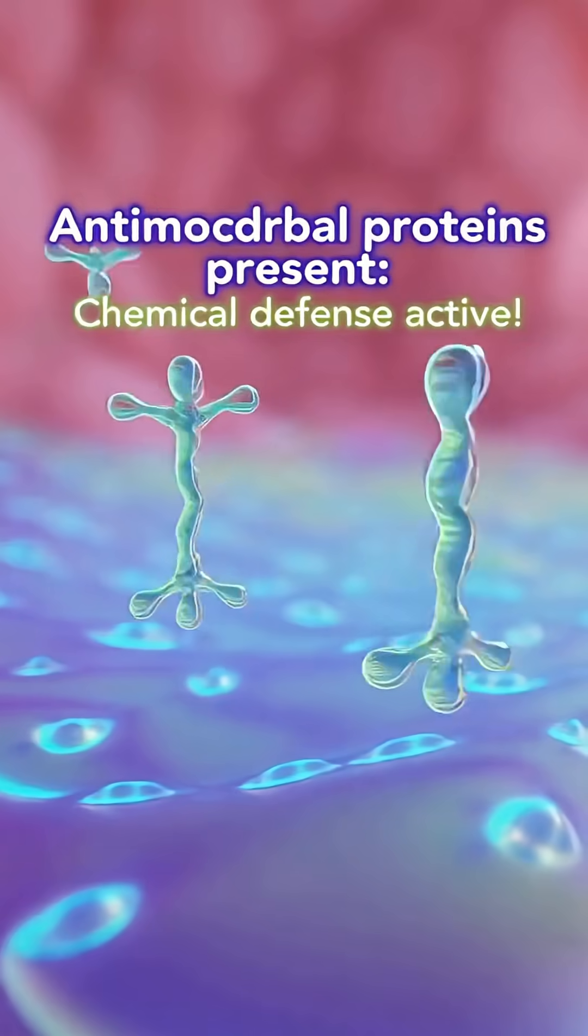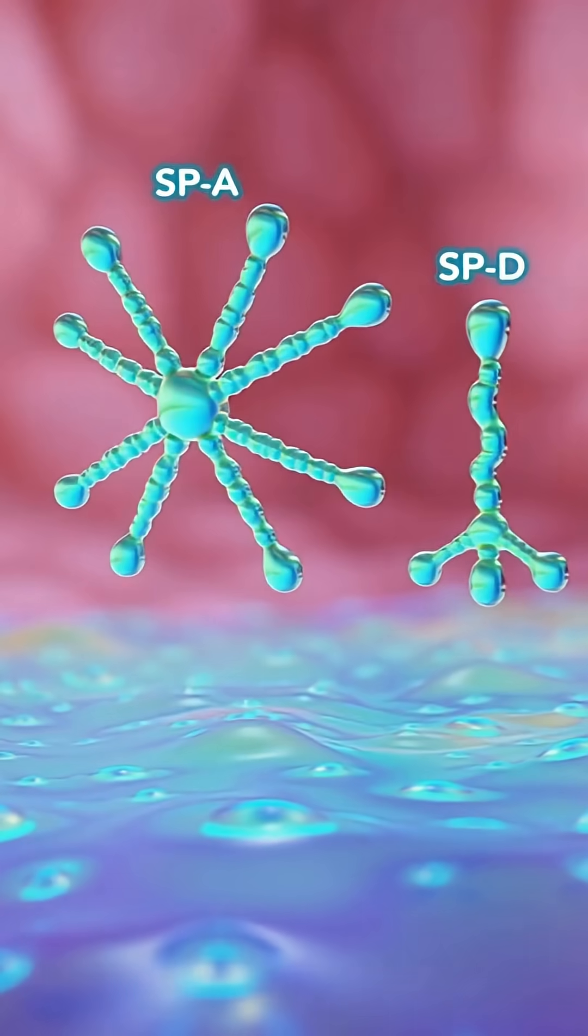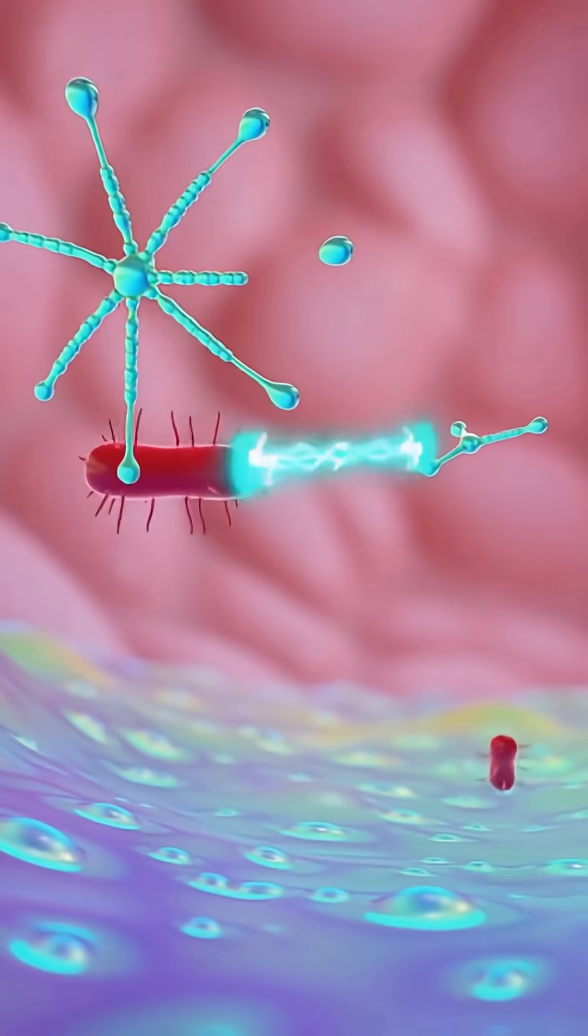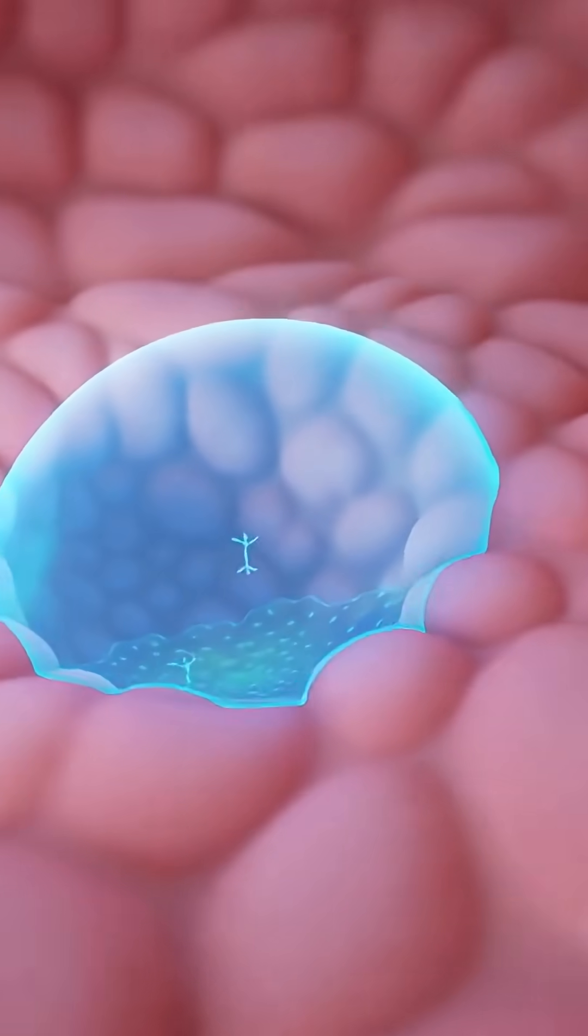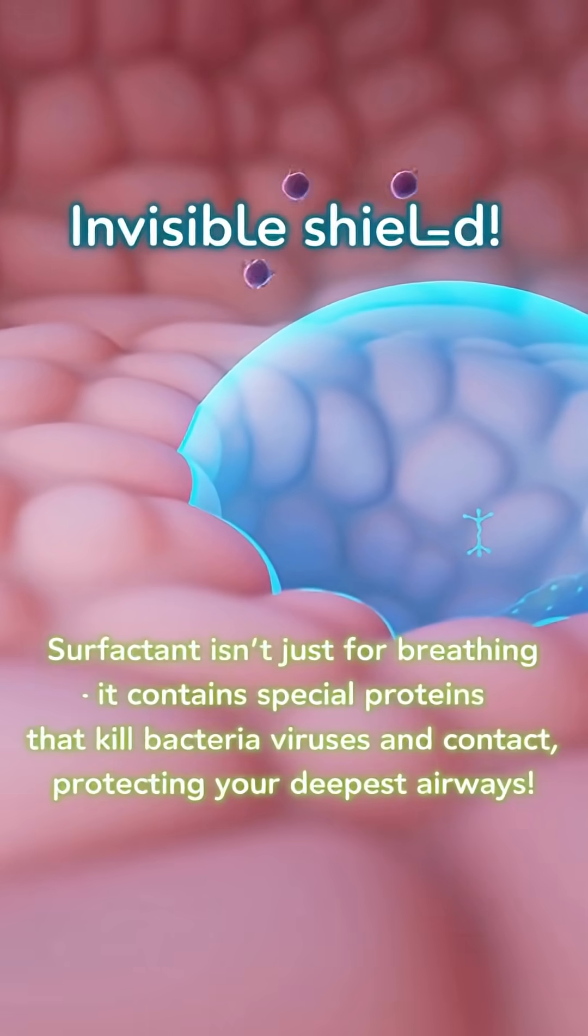Surfactant in the alveoli keeps the tiny air sacs open. Antimicrobial proteins are also present. Chemical defense active. Proteins like SPA and SPD bind to germs and kill them on contact. This layer works like an invisible shield.